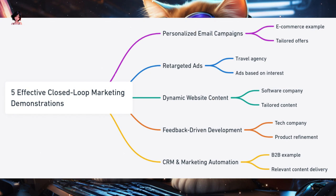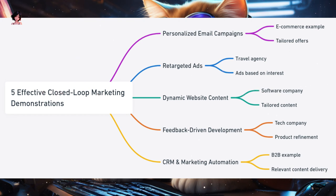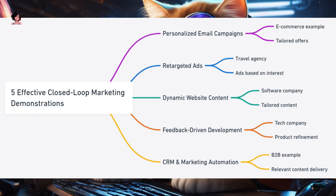Second, retargeted ads — a travel agency notices that a user searched for flights to Paris but didn't book. They then display ads for Parisian holiday packages on the user's social media feeds. Outcome: higher conversion rates as users are reminded of their initial interest. Third, dynamic website content — a software company offers different products for businesses and individuals. Based on browsing history, when a visitor returns to the site, they see content tailored to their category — business or individual. Outcome: improved user engagement and increased likelihood of conversion.